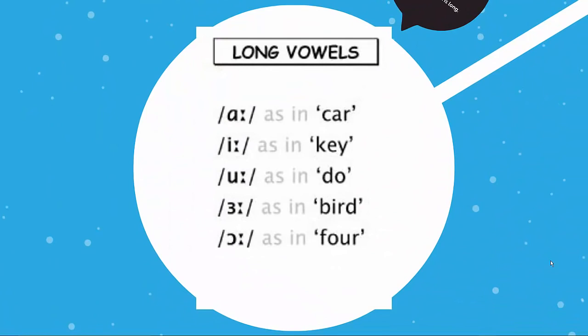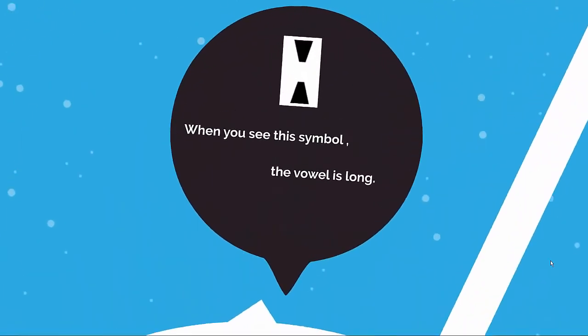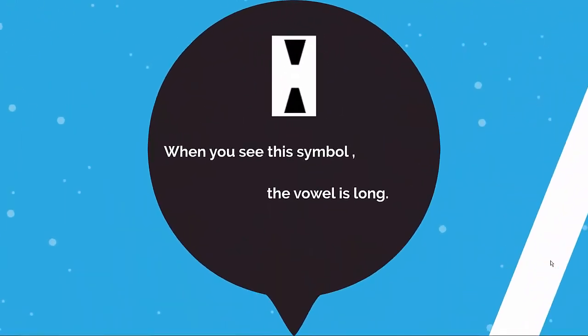We have also seen long vowels: ɑː as in car, iː as in key, uː as in do, ɜː as in bird, ɔː as in for. You can notice here that when you see this symbol after a vowel, it means that the vowel is long or tense.